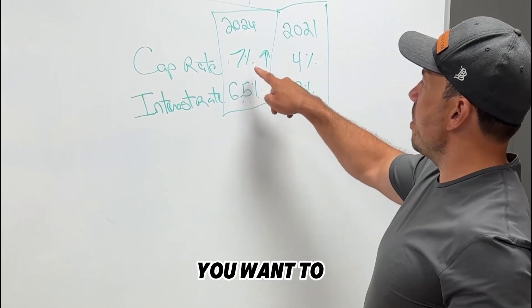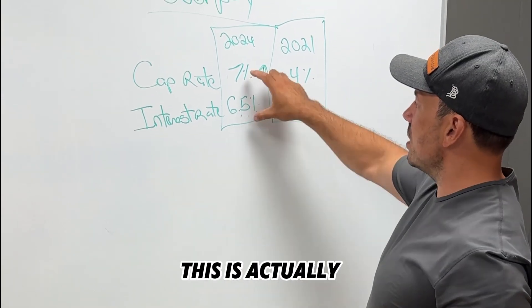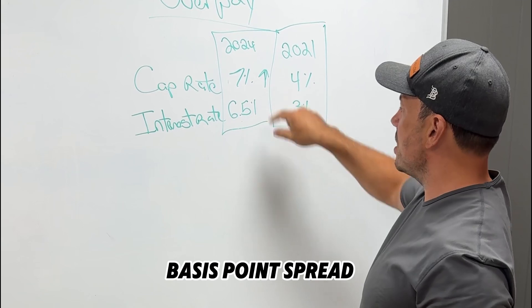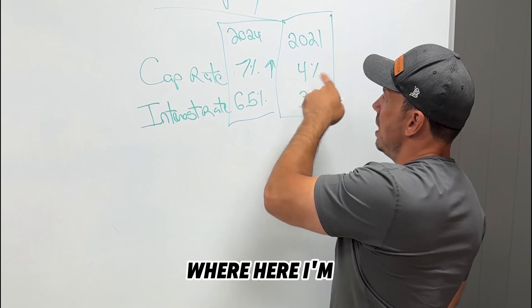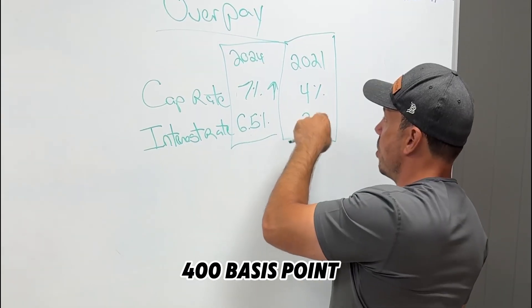Now, why do you want to buy a 7? This is actually called a 50 basis point spread. So that's half a point spread between the cap rate and the interest rate, where here I'm saying there's a full 100 basis point spread.